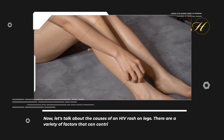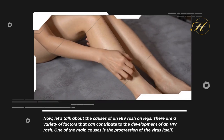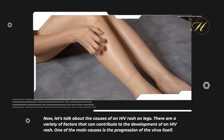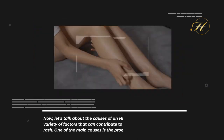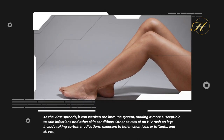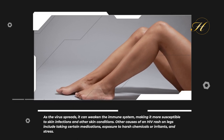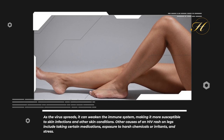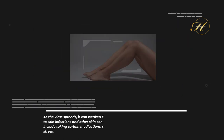Now let's talk about the causes of an HIV rash on legs. There are a variety of factors that can contribute to its development. One of the main causes is the progression of the virus itself — as it spreads, it weakens the immune system, making it more susceptible to skin infections. Other causes include taking certain medications, exposure to harsh chemicals or irritants, and stress.